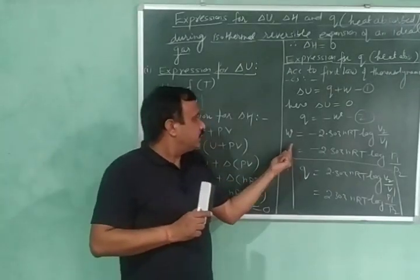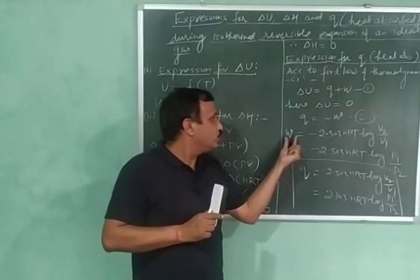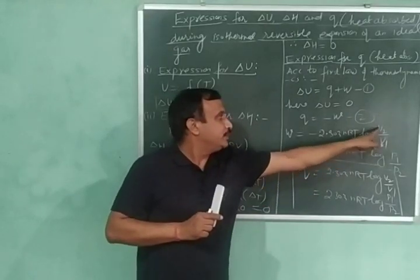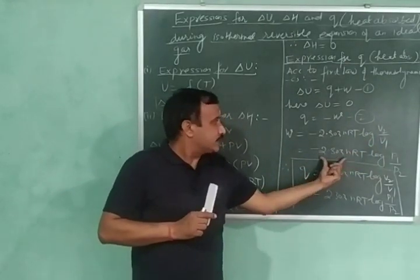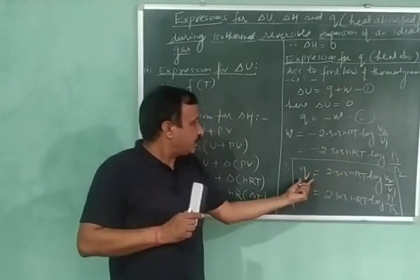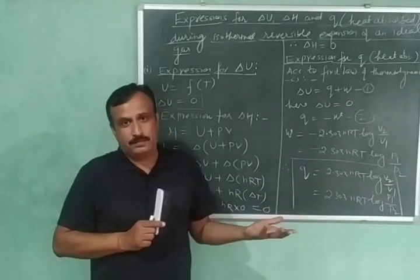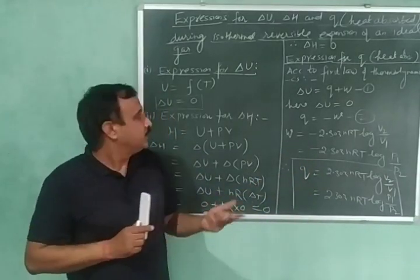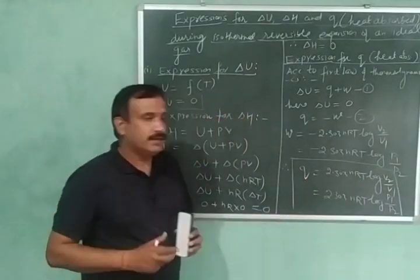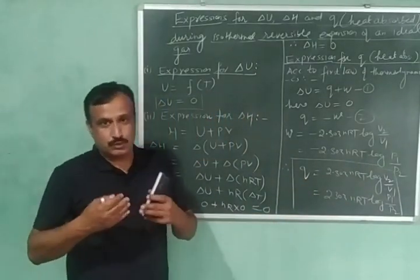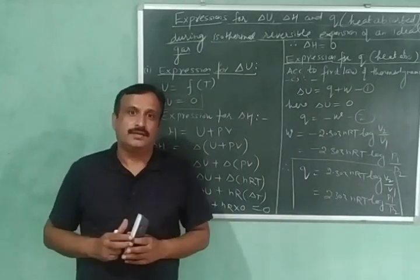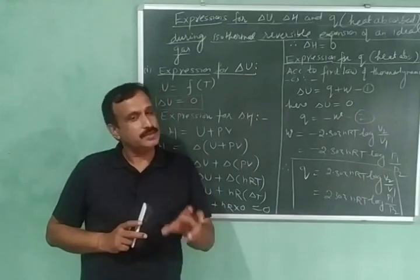In my previous video we derived the expression: W is equal to minus 2.303 NRT log(V2/V1), and an equivalent expression in terms of pressure. The expressions for the heat absorbed Q will be the same but with a positive sign, since Q equals minus W. So the heat absorbed by the gas is completely converted into work, and its internal energy remains constant.